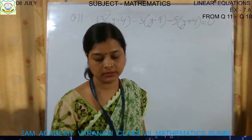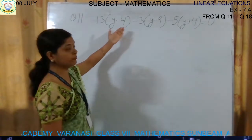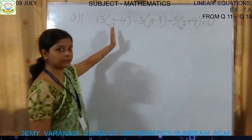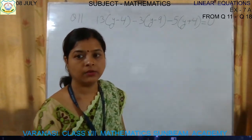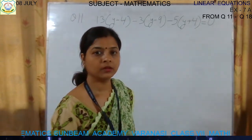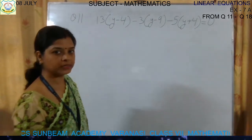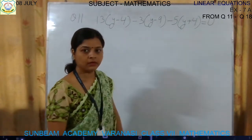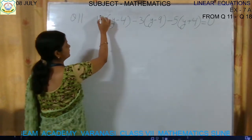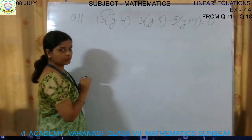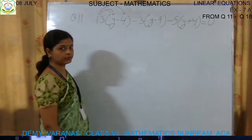Just match it, children, and then start. How will we start? There are a few brackets. We will simplify the brackets first. Now, 13 into y and 13 into minus 4. First we will multiply 13 with y, and then we will multiply 13 with 4 along with its bracket sign.